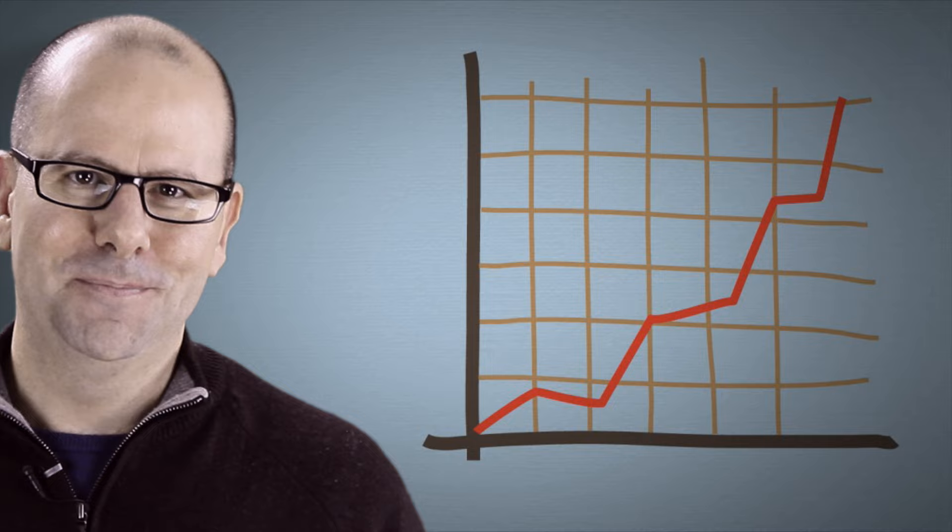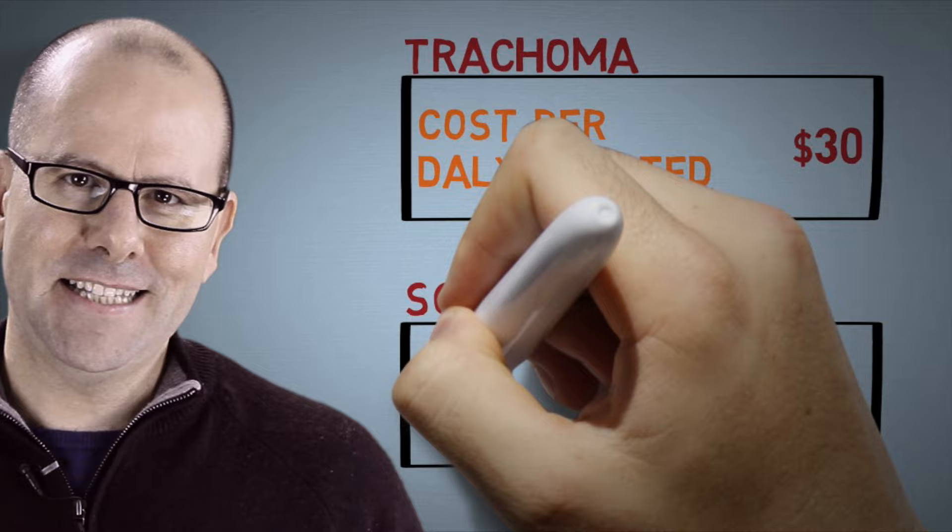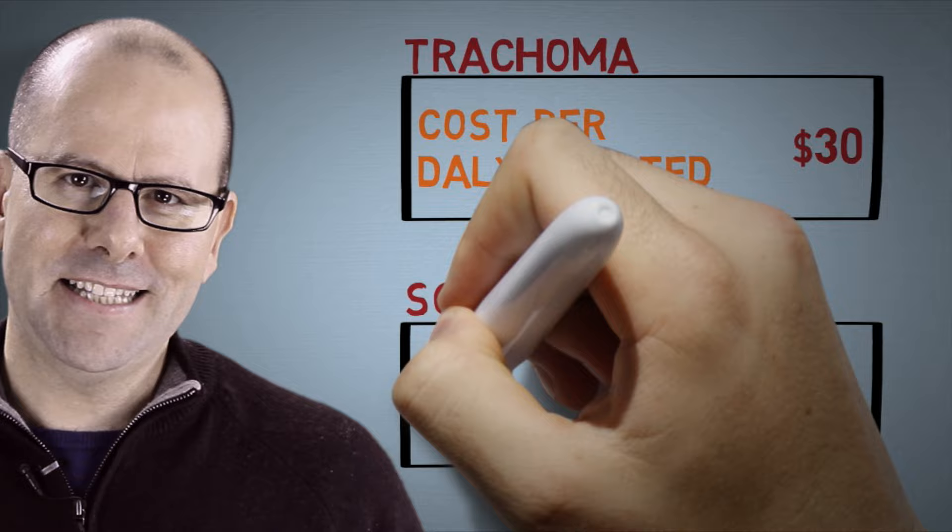Let's look at an example. The cost of treating trachoma, which is an eye infection that causes blindness mostly in sub-Saharan Africa, is about $30 to $40 per DALY averted, whereas the cost of treating schizophrenia is about $6,000 per DALY averted. So for the same amount of money, an NGO or government could theoretically buy 200 times more DALYs averted by investing in treatment for trachoma.